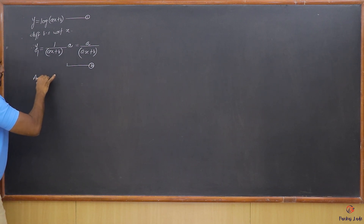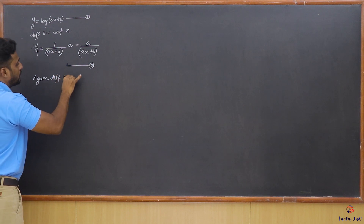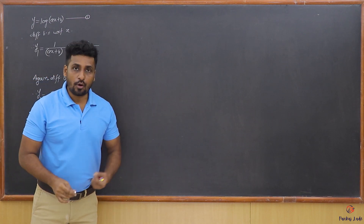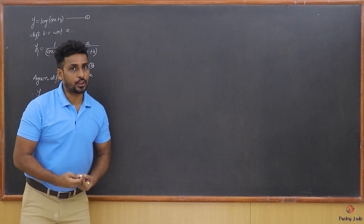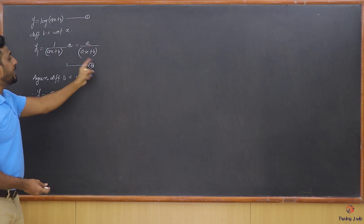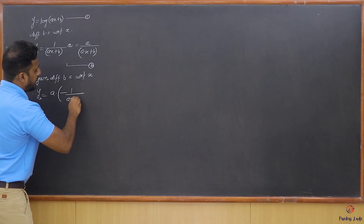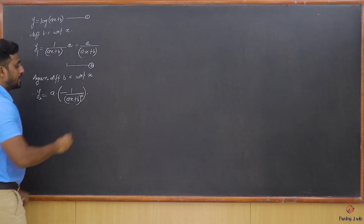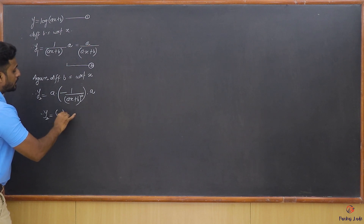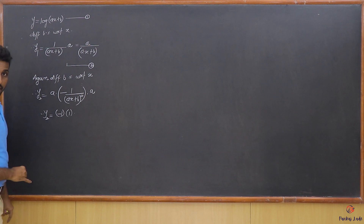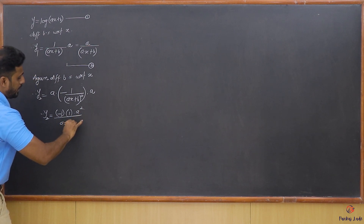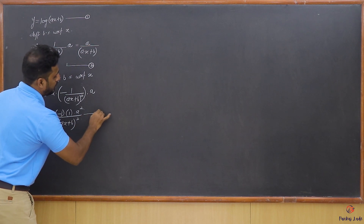Now, again differentiate both sides with respect to x. I get y2. A is a constant. I know the derivative of 1 upon x is minus 1 upon x squared. Here instead of x we have ax plus b, a function of x, so it will be differentiated using chain rule. The derivative of 1 upon ax plus b is minus 1 upon ax plus b whole squared, into the derivative of ax plus b which is a. So y2 equals minus 1 into a squared upon ax plus b whole squared. Let's call this the third equation.